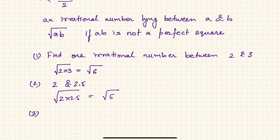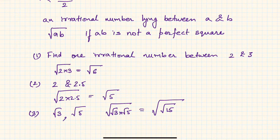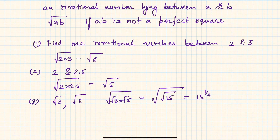Another example: find an irrational number between √3 and √5. Nothing but √(√3 × √5) = √(√15), which is the fourth root of 15, written as 15 to the power 1/4. So the fourth root of 15 lies between √3 and √5.